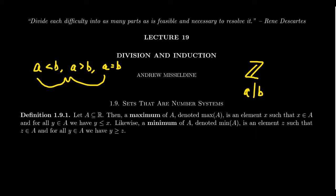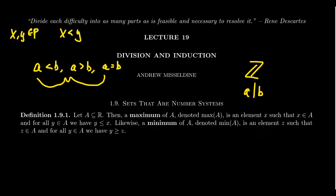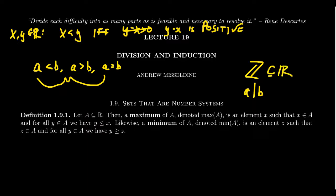When I talk about two integers being less than each other, I'm using the ordering of the real numbers for which we say that X is less than Y — these are real numbers, of course. This happens if and only if their difference, Y minus X, is a positive number. So this is what it means for real numbers to be bigger than each other. And since the integers are a subset of the real numbers, we can use the ordering of the real numbers to also talk about ordering of integers.